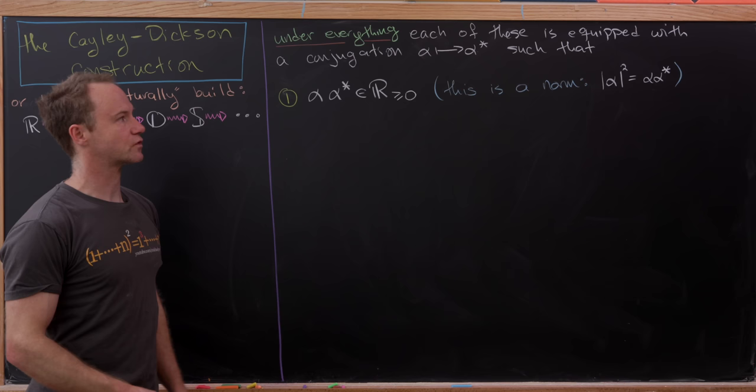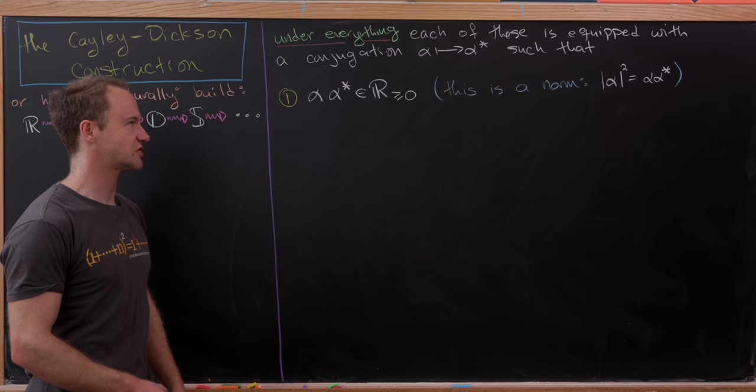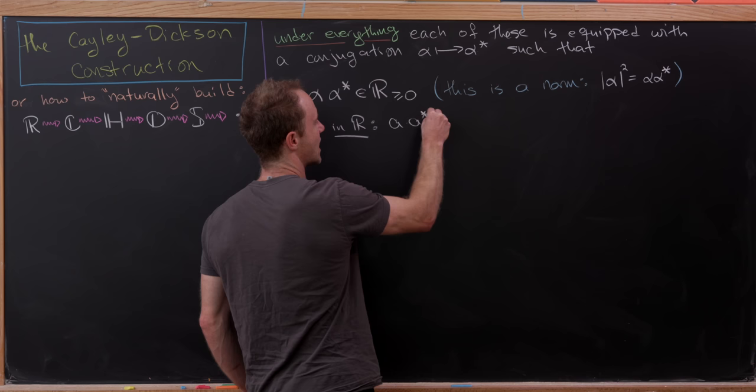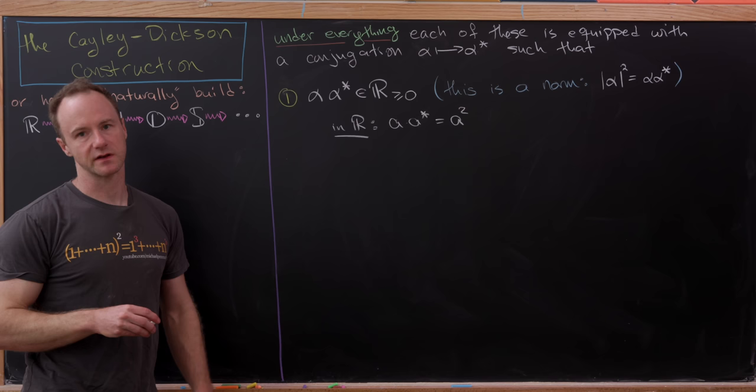The first rule that this conjugation has to satisfy is: if you multiply something with its conjugate, you get a non-negative real number. Inside of the real numbers, this is totally trivial, because a conjugate is simply a, so you get a-squared. The conjugate of any real number is just that real number itself.